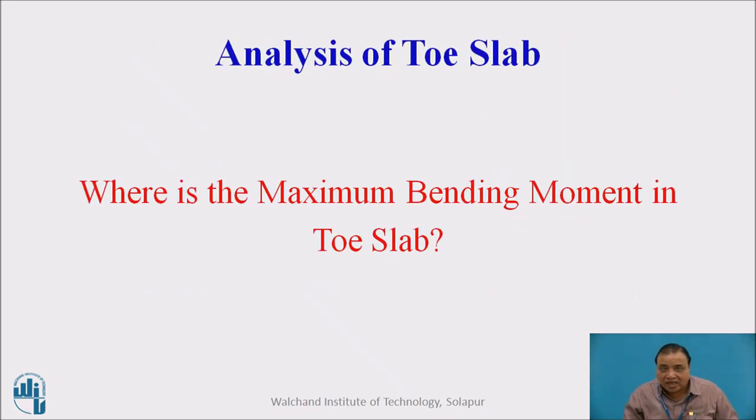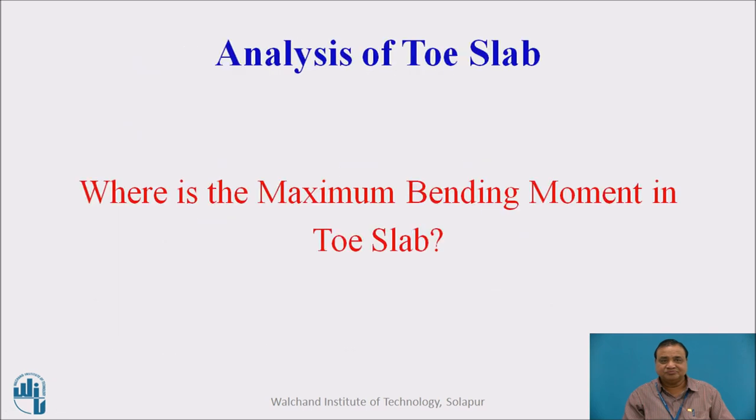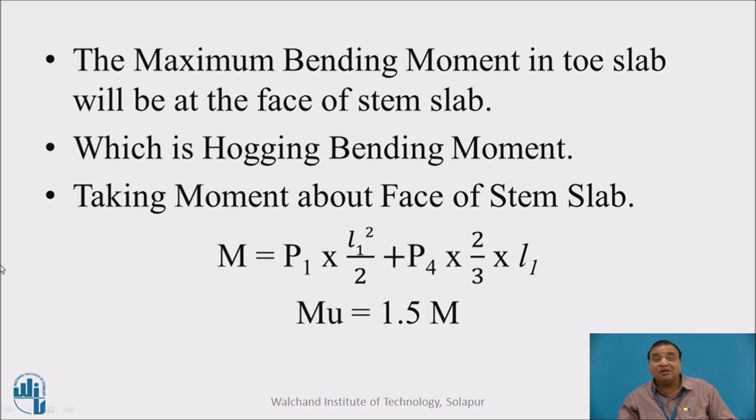Analysis of toe slab. Where is the maximum moment in the toe slab? This is toe slab from here to here of length L1, up to the face of the stem slab. Where will be the maximum bending moment for this particular toe slab when it is subjected to pressure P1 here and pressure P3 here? The maximum bending moment in the toe slab will be at the face of the stem slab. It's a cantilever of length L1 which is a hogging bending moment because the pressure is upward and will try to lift up the toe portion.